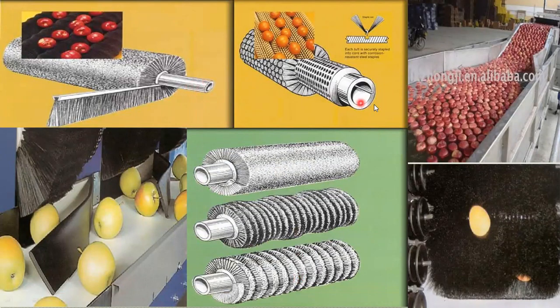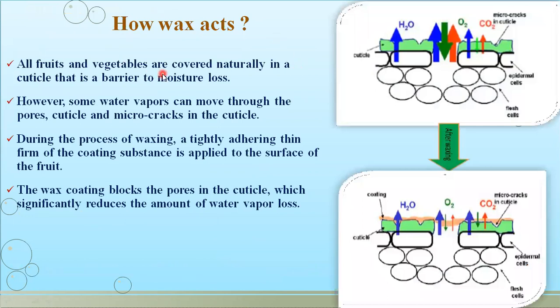Some pictures are shown here illustrating which kind of equipment is used for the different waxing methods. Brushing rollers are shown here. Next we will see how wax acts — meaning what actually happens during waxing, and how the quality of a particular commodity can be maintained by waxing.